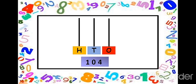Next. Now look at the number one hundred four. At the ones place, which number is written? Four. So how many beads we will draw in the ones spike? Four beads. Let's draw: one, two, three, four. At the tens place, how many beads? No beads — zero is written. Then at the hundreds place, how many beads? One. Draw one bead in the hundreds spike. So the number one hundred four is complete.